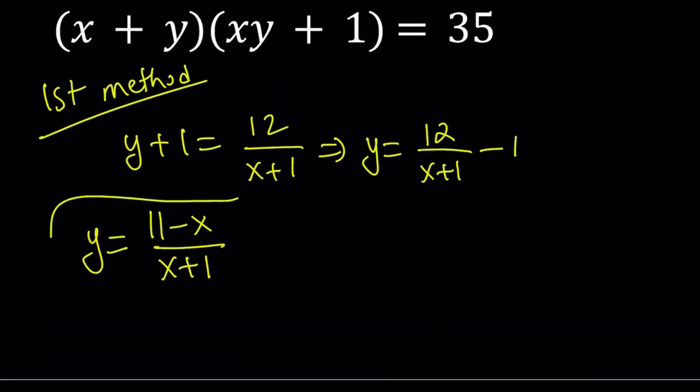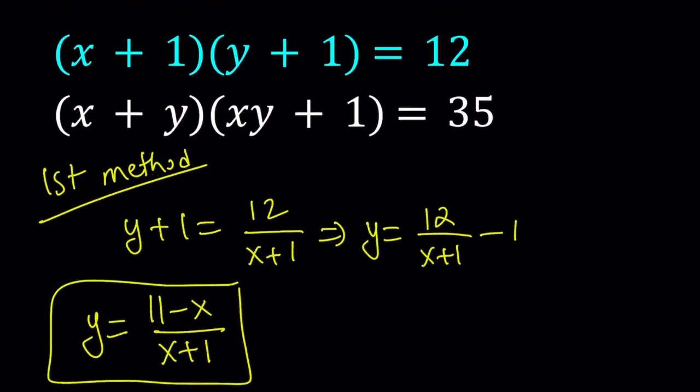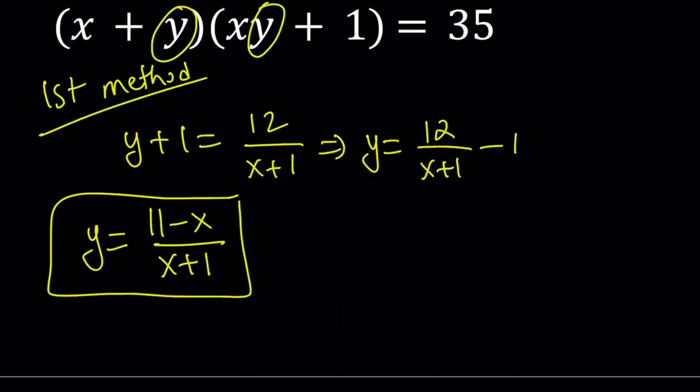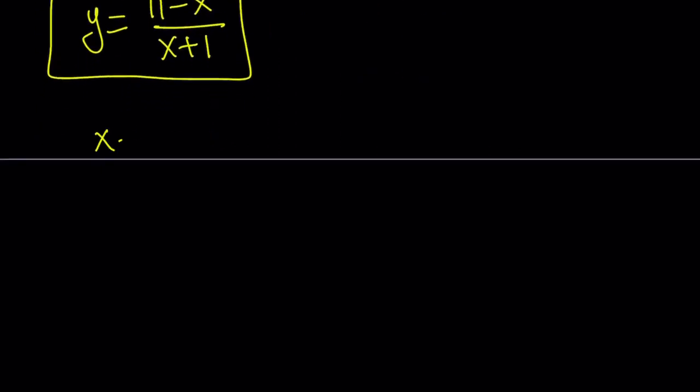Now, we got y in terms of x from the first equation. Let's go ahead and substitute that into the second equation. And this is what we get: x plus y, which is 11 minus x divided by x plus 1.